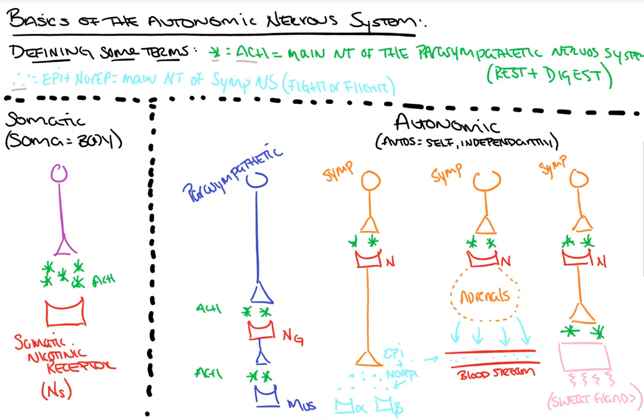There's an autonomic and a somatic portion to our nervous system. The somatic nervous system, displayed here on the left, from Latin soma meaning body, controls our skeletal muscle — that is, the voluntary movements that we can make. It controls our arms, legs, fingers, toes, even our diaphragm when we breathe. We also have our autonomic nervous system on this side, and autos means self or independently. It's named because this is the part of the nervous system that controls itself — it runs without our willful control. Things like peristalsis, things like our heart beating, we don't control any of that. It happens independently.